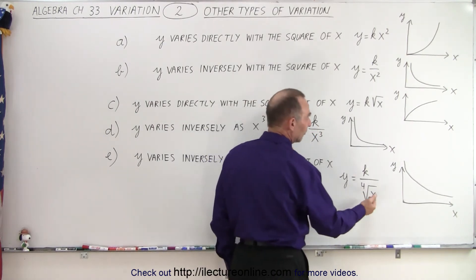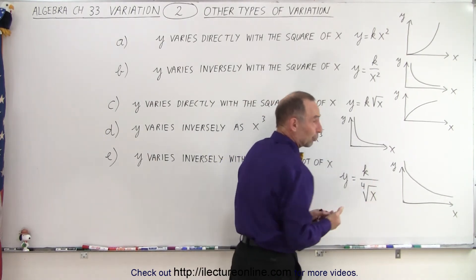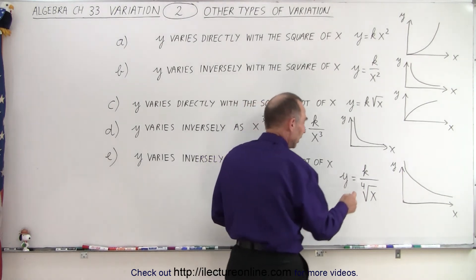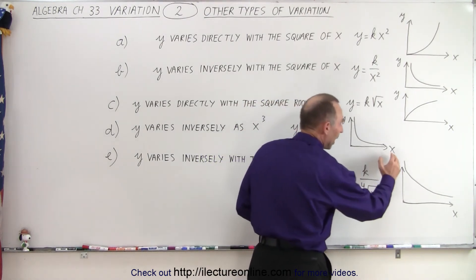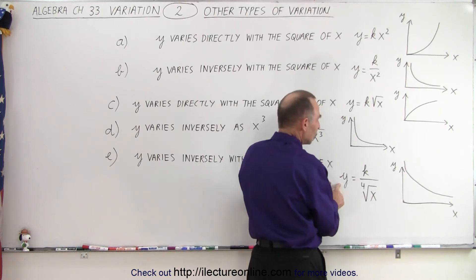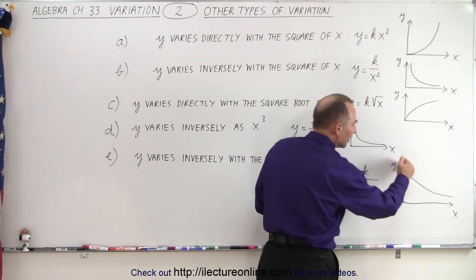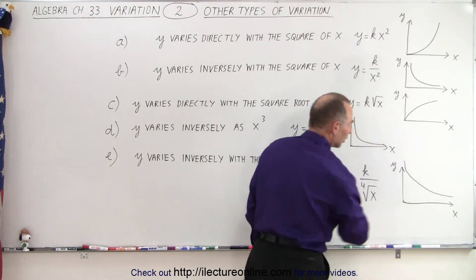And notice that if X gets really big, since you're taking the fourth root of it, that isn't that big of a number. You divide by a smaller number. So Y will still decrease with a bigger value for X, but not quite as fast. So the curve will look a little bit different.